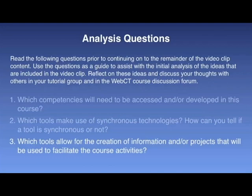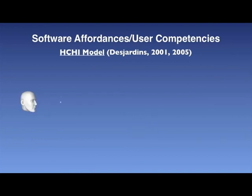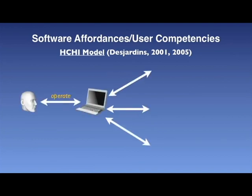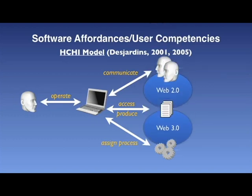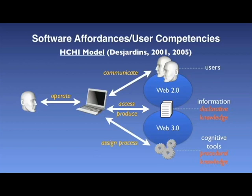This video clip and the use of the tools is based on a model shown on this slide. It looks at the definitions of software affordances and computer and user competencies, and specifies the kinds of competencies we'll be making use of throughout this course. Affordances can be thought of as a quality of an object to provide or make a specific function available to users, while competencies refer to the quality of individuals being adequately or well qualified to use those particular functions.